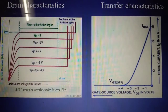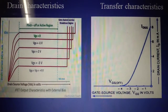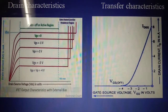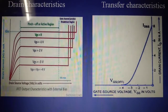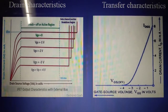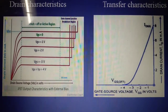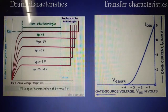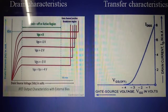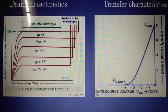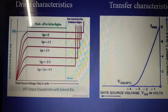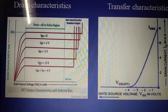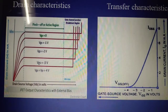The drain and transfer characteristics for the given field effect transistor are shown on graph paper. For the drain characteristic graph, ID is taken on the Y-axis and VDS is taken on the X-axis. As we increase VDS, ID also increases, but at a certain value VDS increases while ID remains constant. This is due to avalanche multiplication.